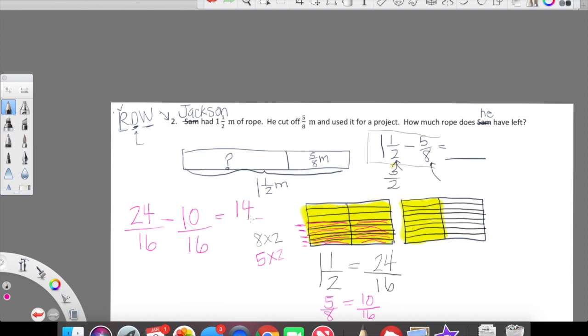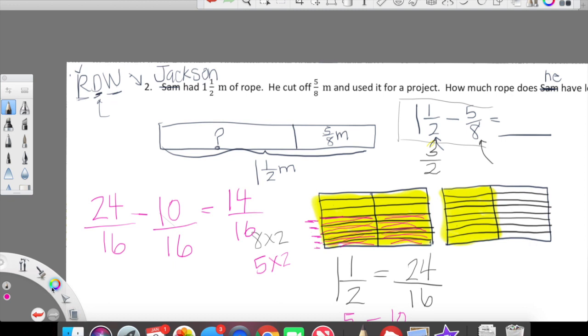Now we can evaluate our expression. One and one half is equal to 24 sixteenths. Five eighths is equal to ten sixteenths. 24 minus ten is 14. Our answer should be 14 sixteenths. Let's see how many boxes we have left over. According to our calculations, our difference should be 14. I have 1, 2, 3, 4, 5, 6, 7, 8, 9, 10, 11, 12, 13, 14. Indeed. Our difference here is 14 sixteenths. Jackson has 14 sixteenths of a meter left over for his next project.